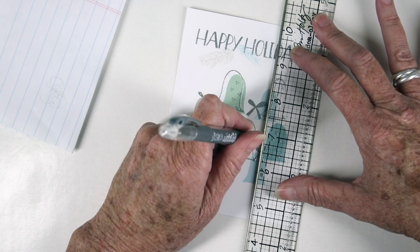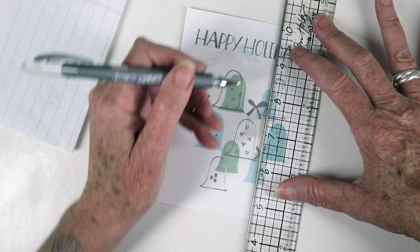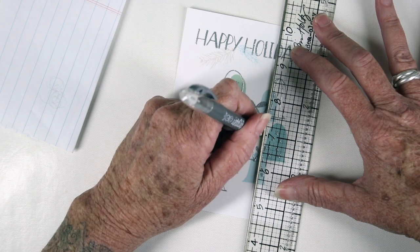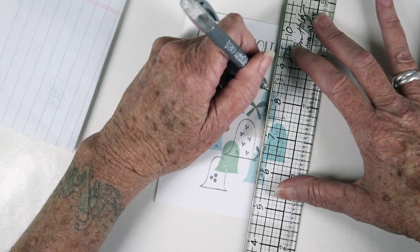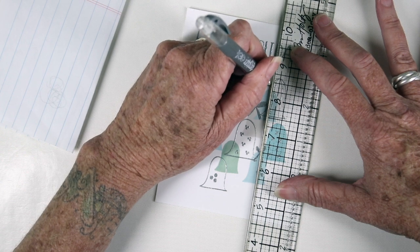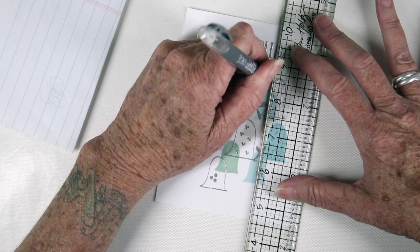I'm also using a silver pen and I'll be drawing some lines straight up from the bells up to the message and I'm using the Tim Holtz design ruler with the metal edge and this will give me a nice sharp line with my pen.